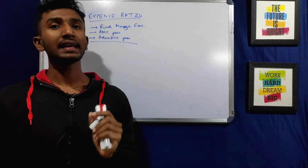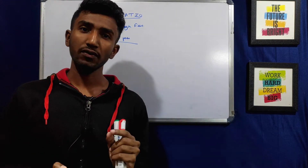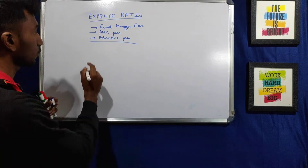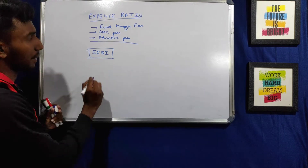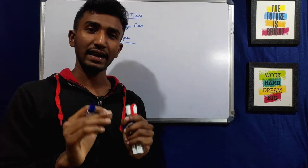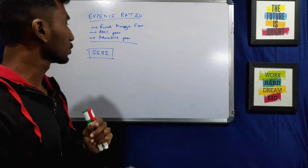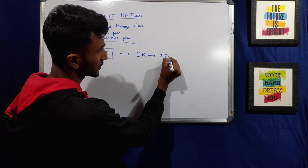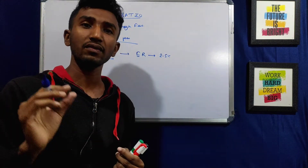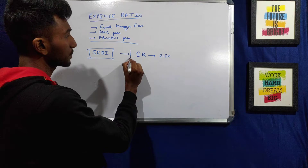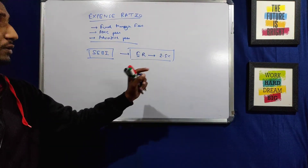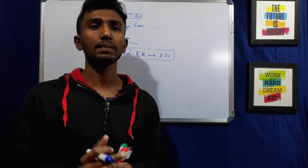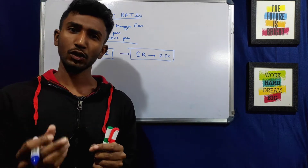Now, can a mutual fund keep any expense ratio they want, or is there a limit? The mutual fund's regulating body is SEBI. SEBI regulates the mutual fund companies and decides the rules — what they can and cannot do. SEBI has decided that the maximum expense ratio for a mutual fund can be 2.5%. No mutual fund can keep an expense ratio higher than 2.5%.